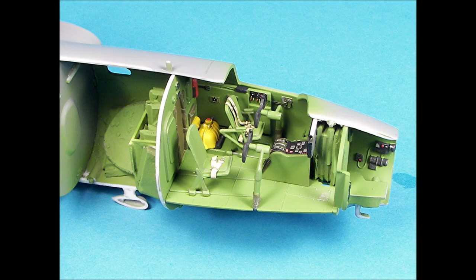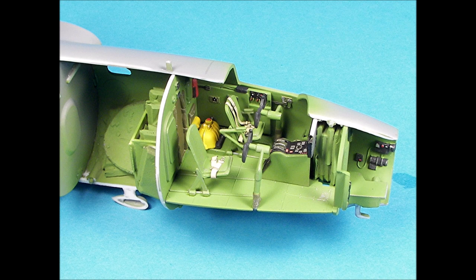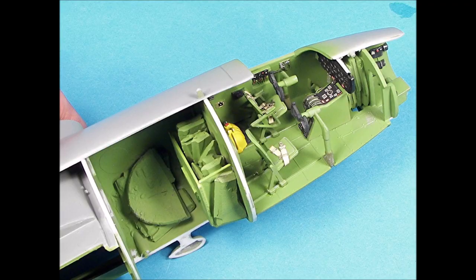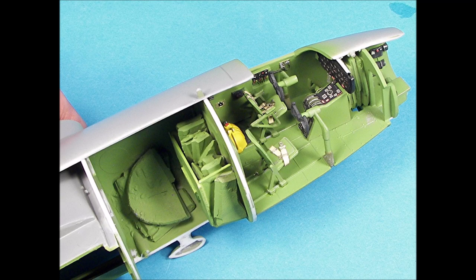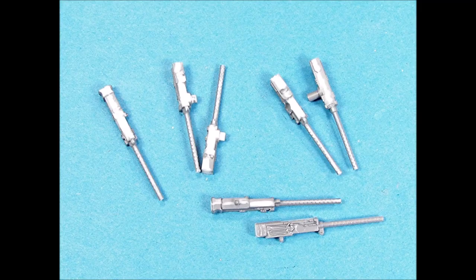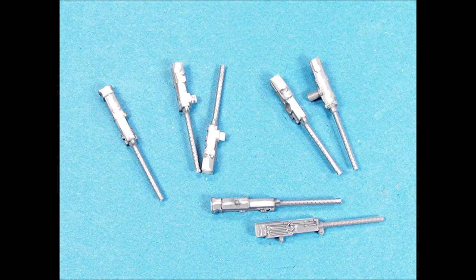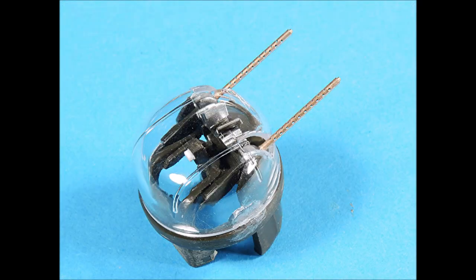The cockpit has now been assembled and the Eduard pre-painted seat and shoulder harness belts really help add an additional layer of accuracy and realism to the cockpit. Here you can see how the Eduard pre-painted placards stand out. I cleaned up the .50 caliber machine guns and carefully scraped off the mold lines. An alternative for the kit supplied .50 caliber machine guns is the two-part Masters brass barrels which I highly recommend.